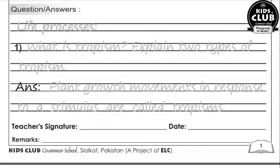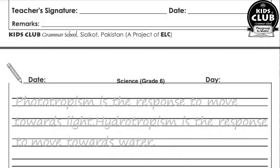The plant growth movements in response to a stimulus are called tropism. Tropism response hai — ek growth ka — plant kaise grow karta hai stimulus ke zariye. Phototropism is the response to move towards light. Photo means light.